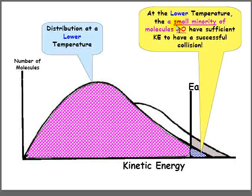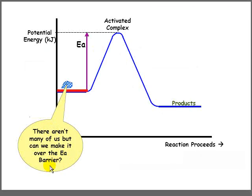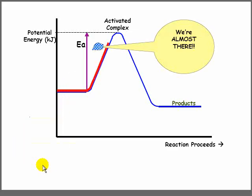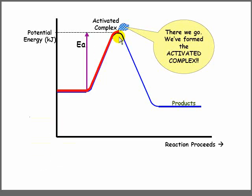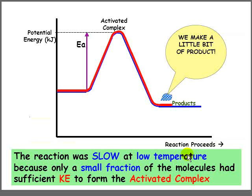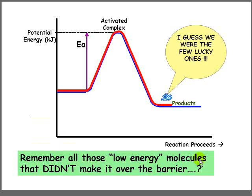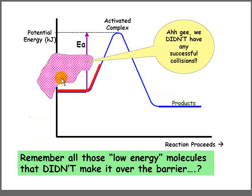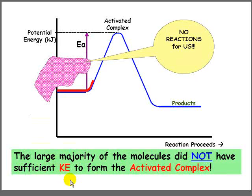At this lower temperature, there is a small minority of molecules that do have sufficient kinetic energy for a successful collision, indicated by the small number of blue molecules on the graph. They make it over the EA barrier with kinetic energy to spare, form the activated complex, and proceed to form the products. But there weren't many of them. The reaction was slow at this low temperature because only a small fraction of the molecules had sufficient kinetic energy to form the activated complex. The large majority of the molecules — the purple ones — did not have sufficient kinetic energy, which is why the reaction was so slow.